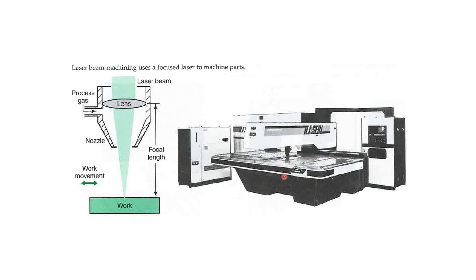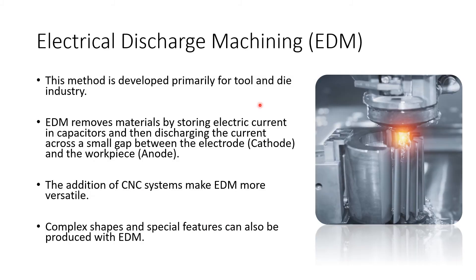Here's a laser beam machining diagram from the textbook. You can see the laser beam and the lens, your workpiece, the direction of work movement, the focus distance, the nozzle, and where the gas comes in. The part is situated right in the middle of the machine.